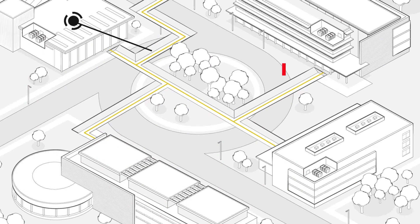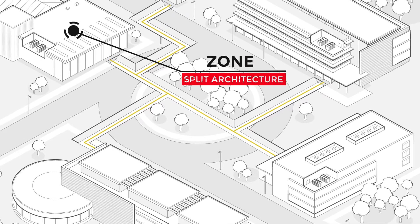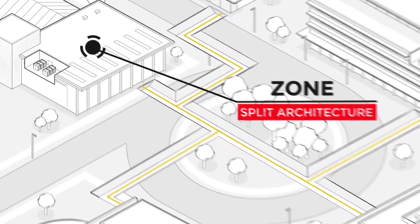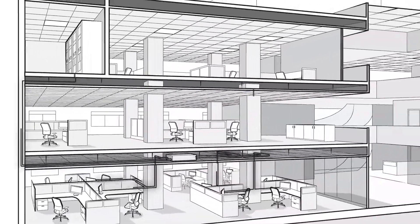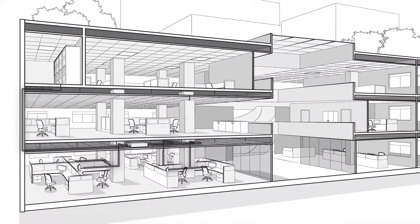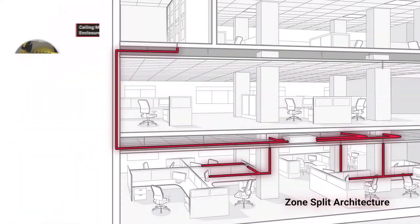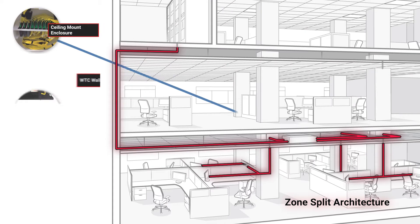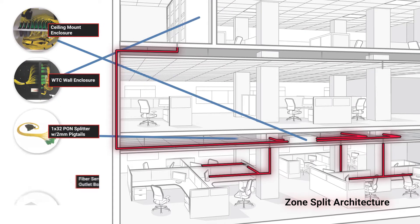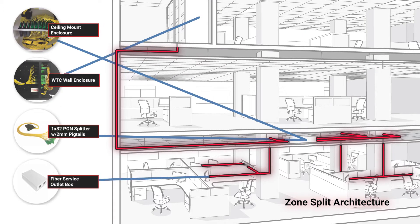The zone split architecture works well in large spaces with many end users located closely together in a multi-story office building. Each floor may be its own zone or have multiple zones, feeding back to an OLT located in a single telecommunications room. On a campus installation, each zone may be as large as an entire building, with the OLT being in another building elsewhere on campus.